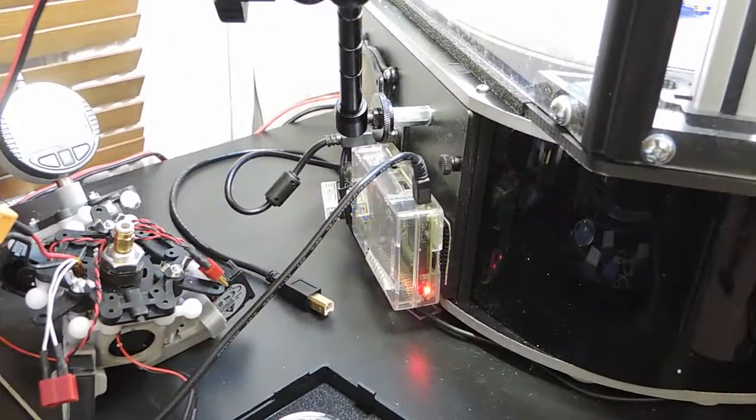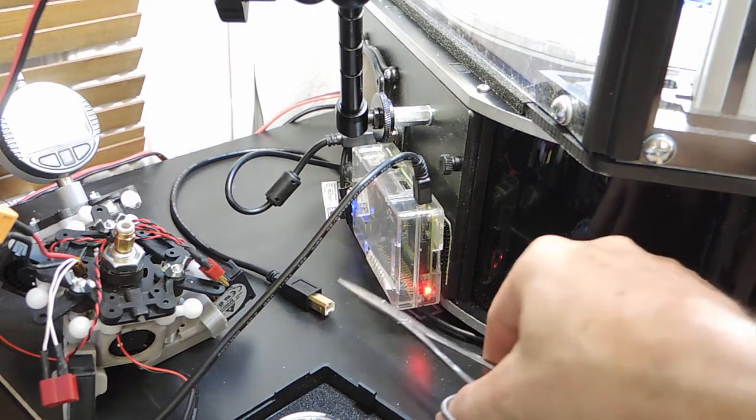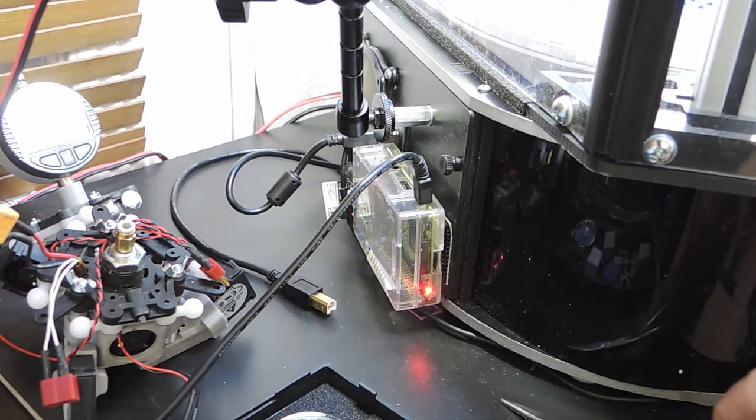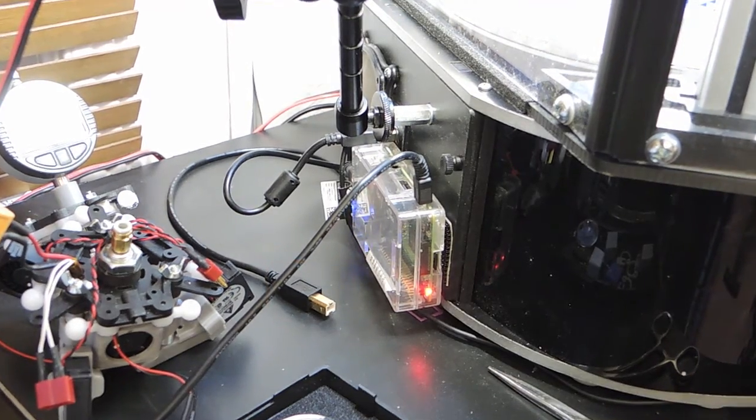A Raspberry Pi 2 is configured with Octoprint to provide wireless printing and monitoring capabilities as well as controlling a webcam for time-lapse movies of the prints. The extra USB connector is used when controlling the printer via a computer.